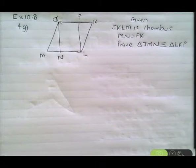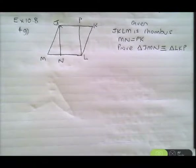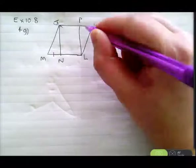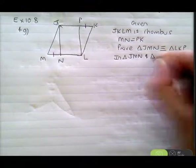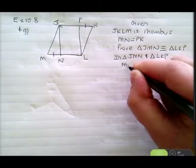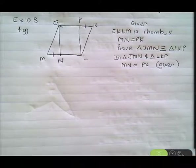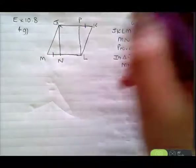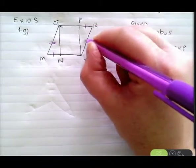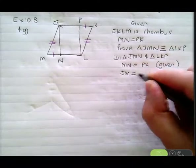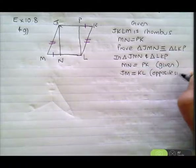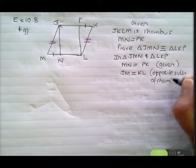Let's do the given first. In triangle JMN and triangle LKP: MN equals PK — given. JM equals KL — why? Opposite sides of a rhombus are equal. Mark it on the diagram. What else? Another property of a rhombus: angle JMN equals angle LKP. Opposite angles of rhombus are equal.